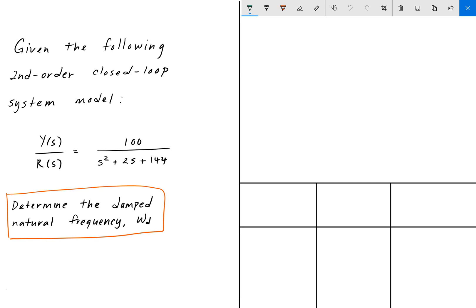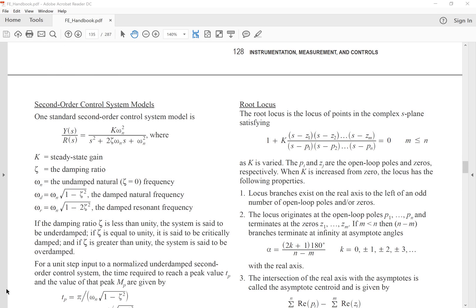So to solve this, we go to the FE Handbook. In the FE Handbook there's an Instrumentation, Measurement and Control section, and that section has a subsection called Second Order Control System Models. There's a transfer function here, Y(s) divided by R(s), that looks similar to the one that we have in our problem. Here K is the steady state gain, the Greek letter zeta is the damping ratio, omega n is the undamped natural frequency (so that is the frequency when there's no damping, when the damping is equal to zero), and omega d is the damped natural frequency, which is the frequency when there is damping.